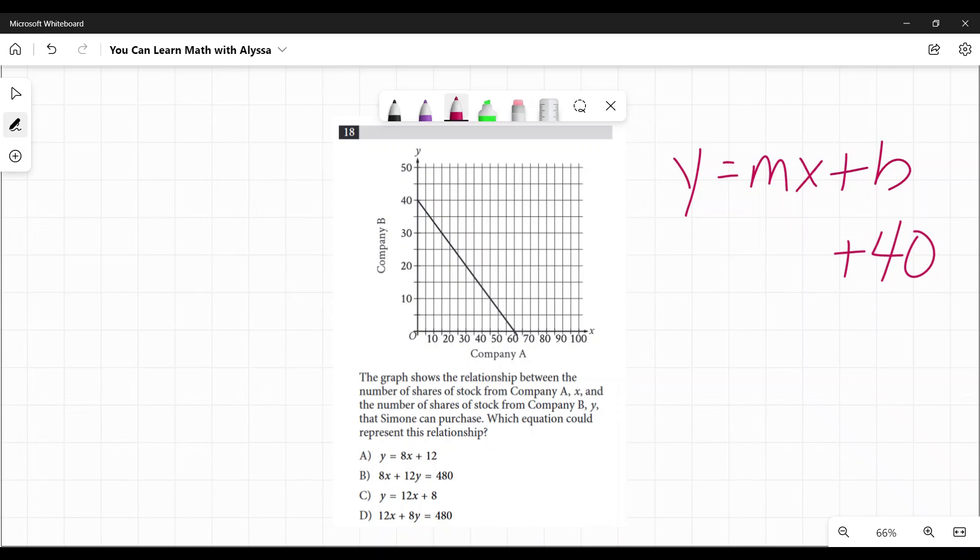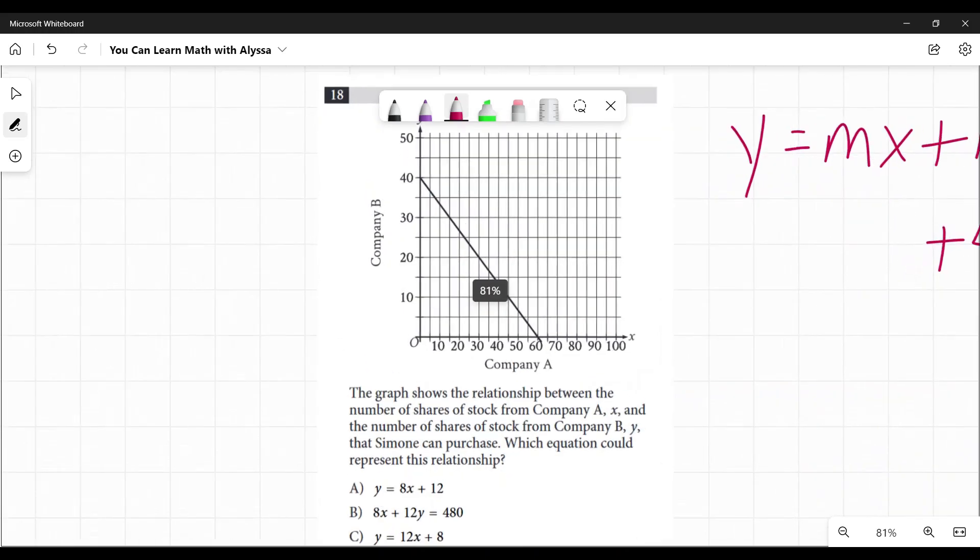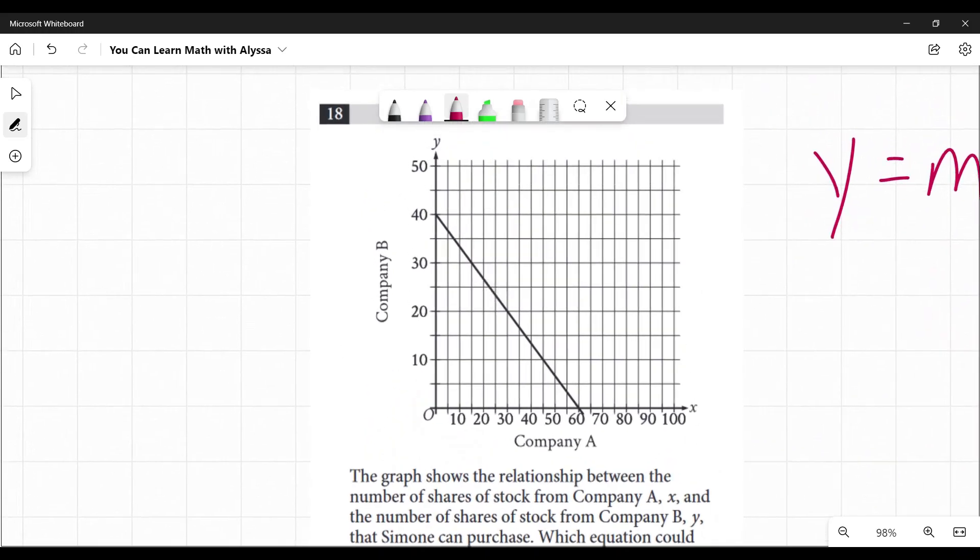Now for my slope, I'm going to pick two points. I'm going to zoom in a little bit here so you can really see this. I'm going to pick that point right there and that point right there. So I'm going from (0, 40), and then this point over here is going to be (15, 30).